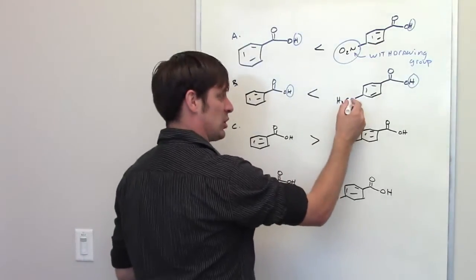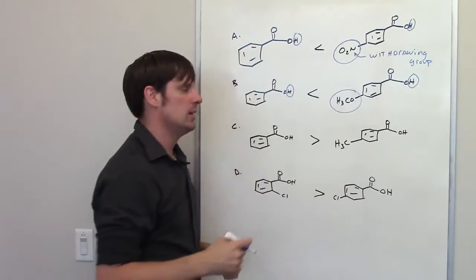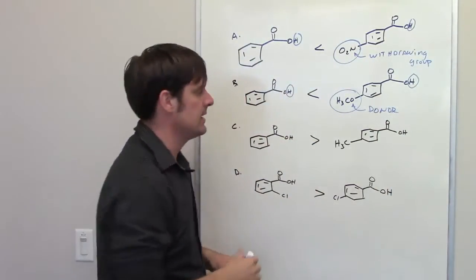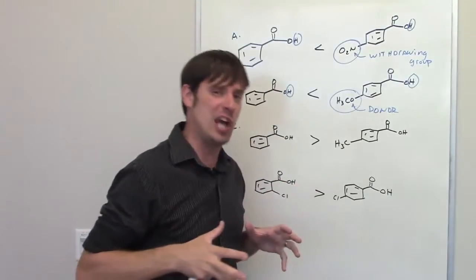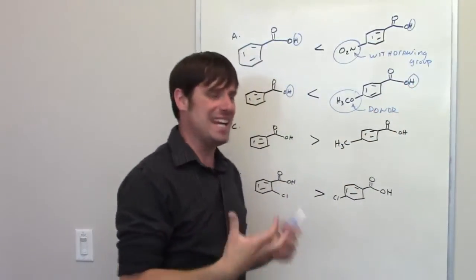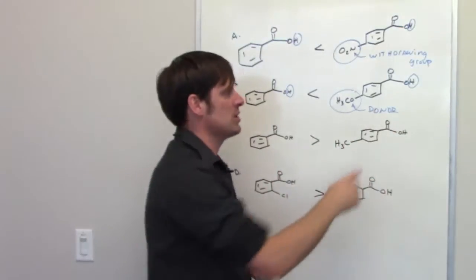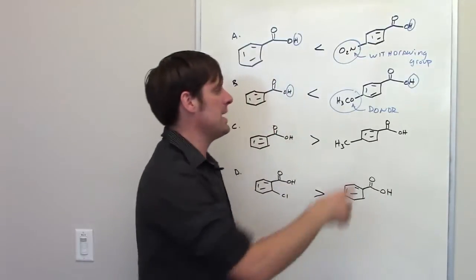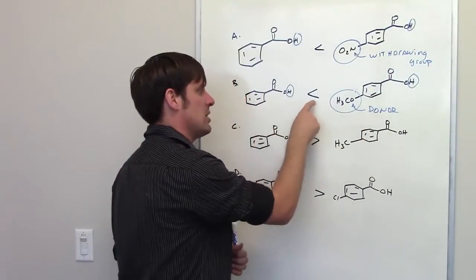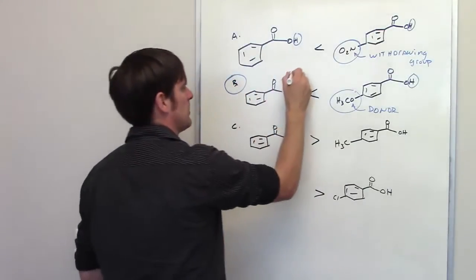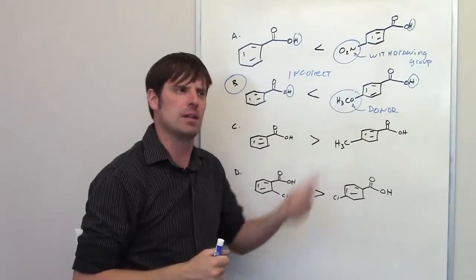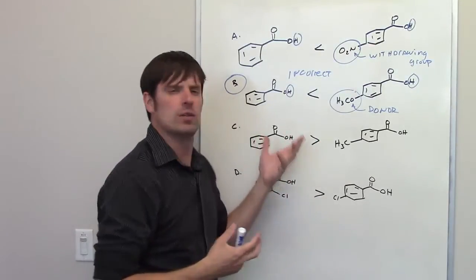What type of group is this methoxy group — is it a withdrawer or a donor? In reality this type of group is actually a donor. This oxygen is releasing or donating electron density into the ring and hence pushing electron density towards this hydrogen. That actually increases the oxygen's grip on that hydrogen, not decreases it, which means this hydrogen is less acidic than it would be without a donating group. So the molecule to the right is actually less acidic than the molecule to the left — this statement is false. This is the correct answer because the question asks which statement is incorrect.